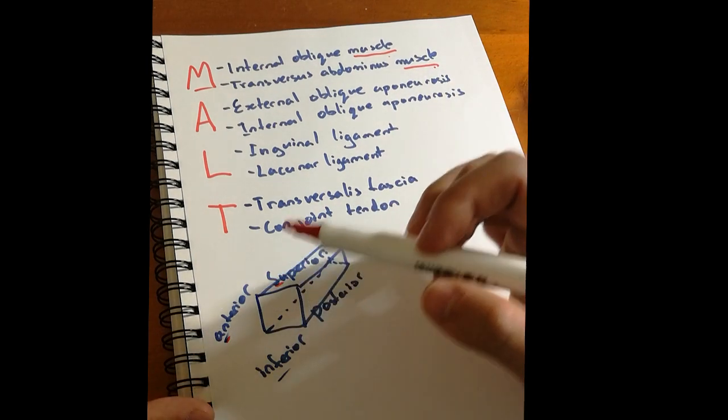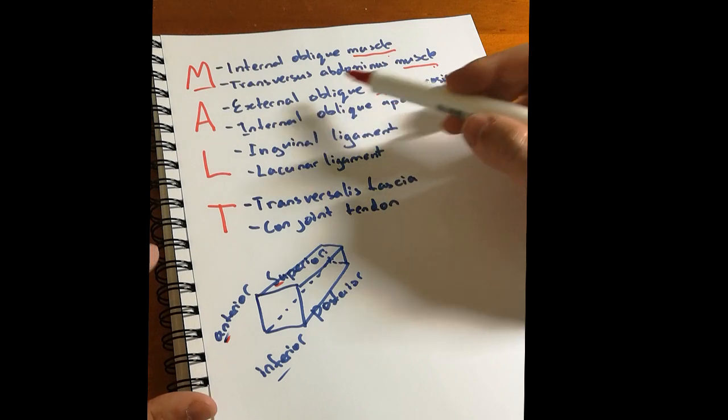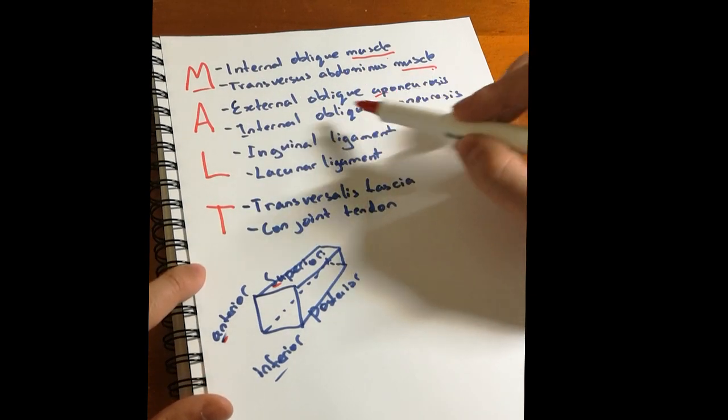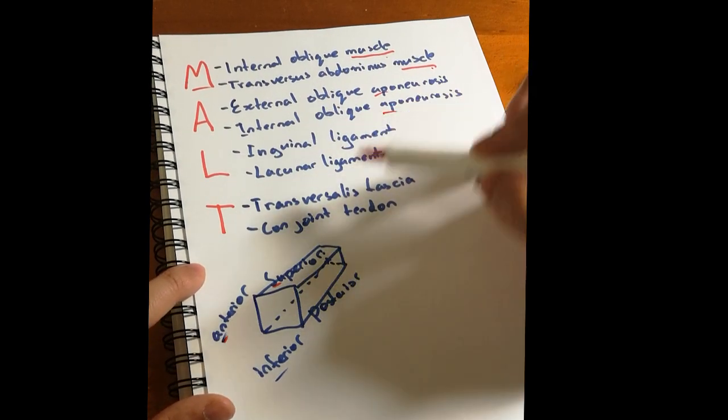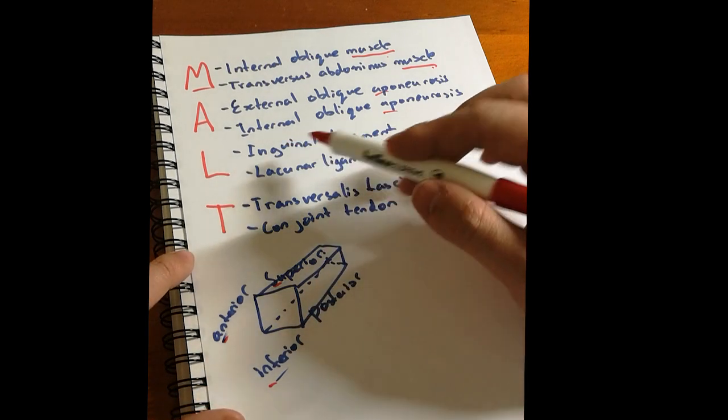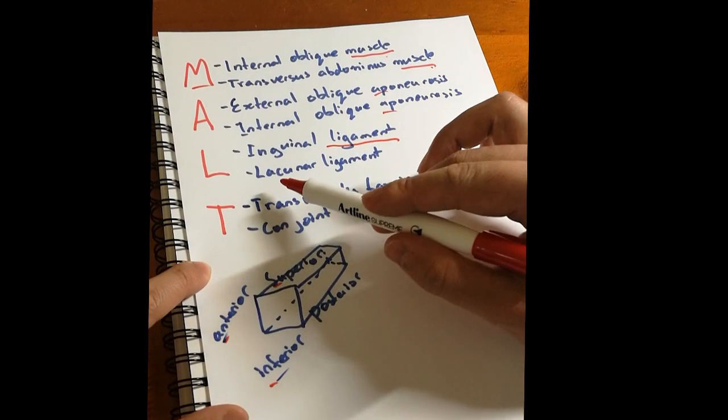Anterior structures are formed by two aponeuroses: the external oblique aponeurosis and the internal oblique aponeurosis. The inferior border is formed by two ligaments: the inguinal ligament and the lacunar ligament.